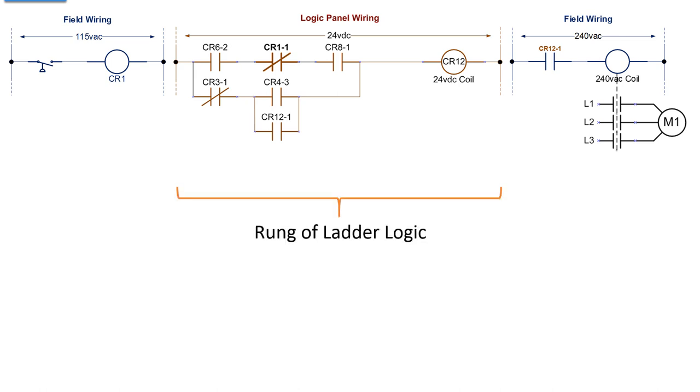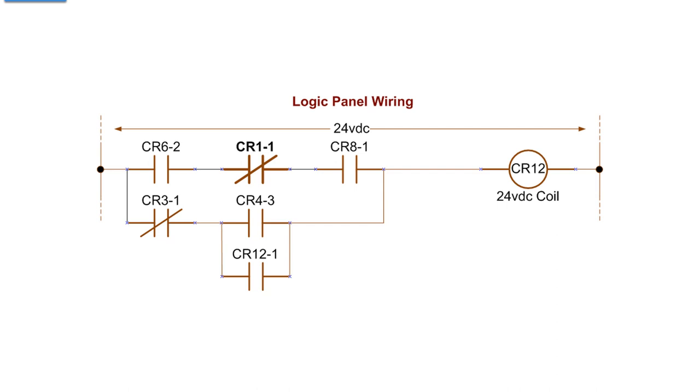Now that is a rung of ladder logic. These are also rungs of ladder logic, even though all three of these are different voltage. Each voltage in a relay diagram has its own set of rungs. Back to our panel logic. In the relay panel, you had the brown relays. They are wired up for the logic. Here's what this rung of logic says.